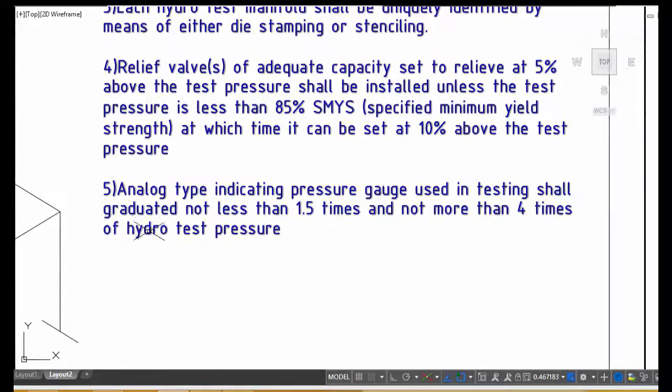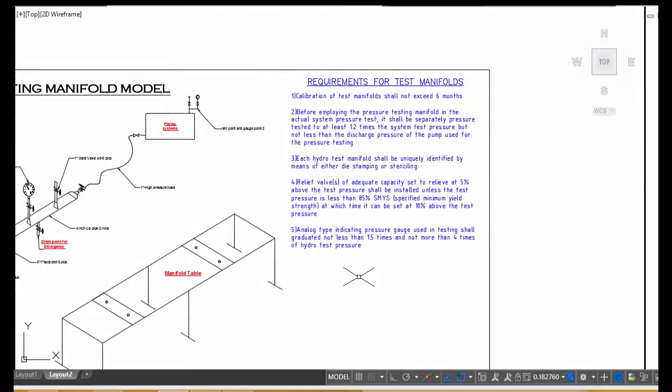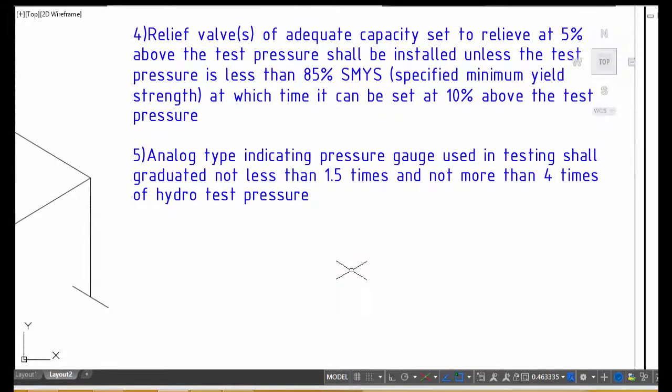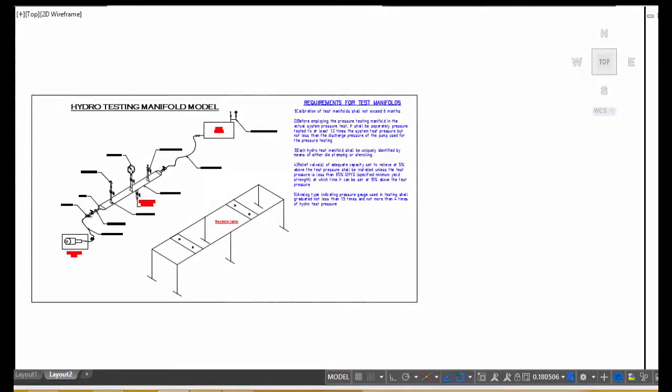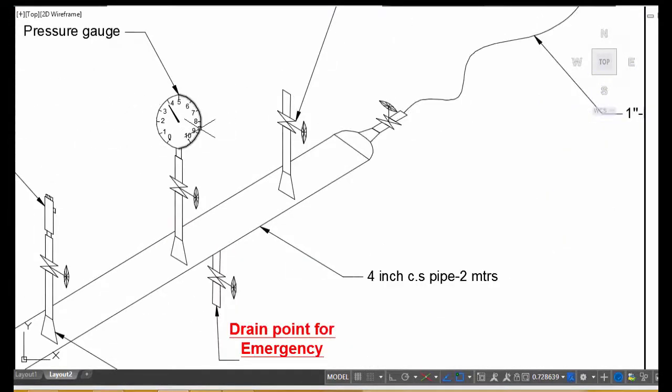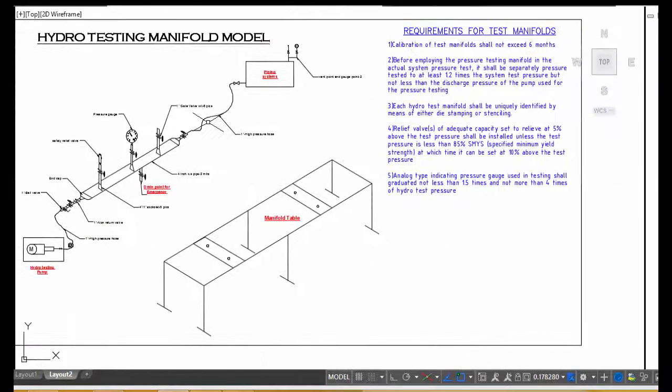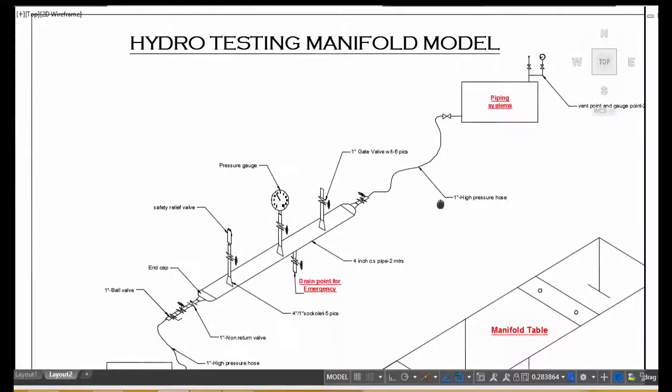And pressure gauge - it is allowed 1.5 times minimum and not more than 4 times of hydrotest pressure for accuracy purposes. For example, 4 bar means 4 into 1.5 times, so that range pressure gauge only you can use. Maximum 4 times you can use.